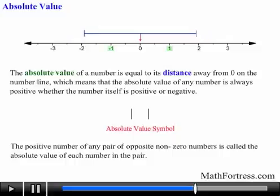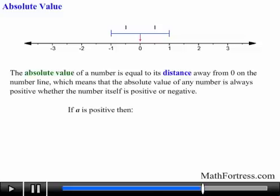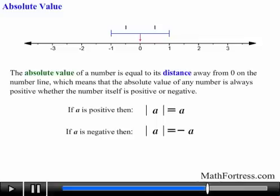For example, 1 and negative 1 form opposite pairs: one is a positive integer and the other a negative integer. The absolute value of positive 1 is equal to 1, and the absolute value of negative 1 is equal to 1. In general, if a is a positive integer, then the absolute value of a will be equal to a. If a is a negative integer, then the absolute value of a will be equal to negative a. And if a is 0, then the absolute value of 0 is equal to 0.